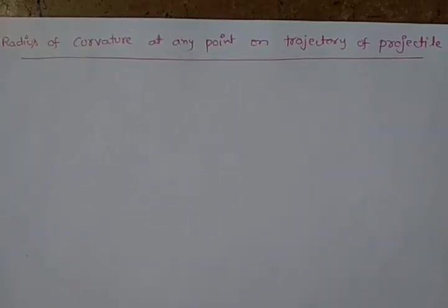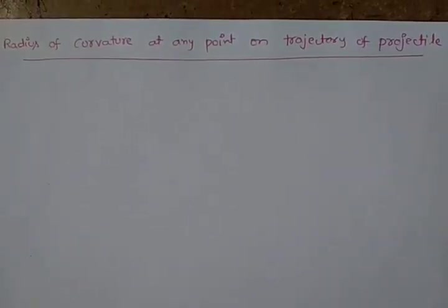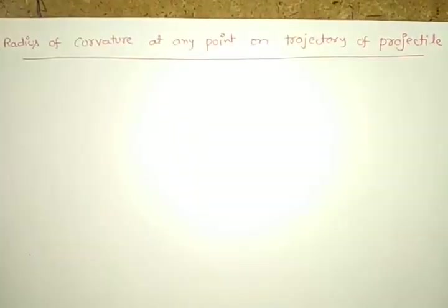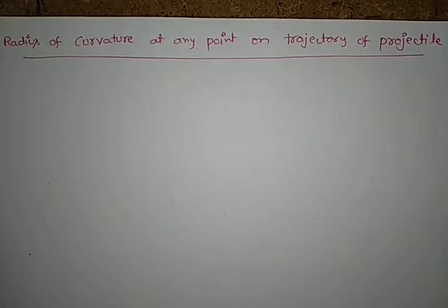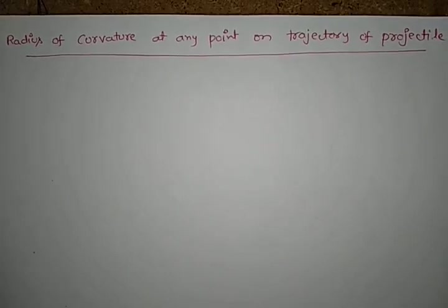The next concept of oblique projectile motion is radius of curvature at any point on trajectory of projectile.